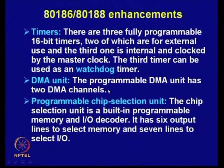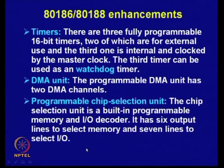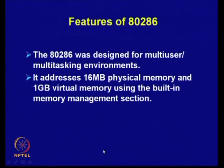The DMA unit provides two channels. The programmable chip select unit has six output lines to select memory and seven lines for selecting I/O. You can interface external memory and I/O devices without the need for additional decoder ICs.